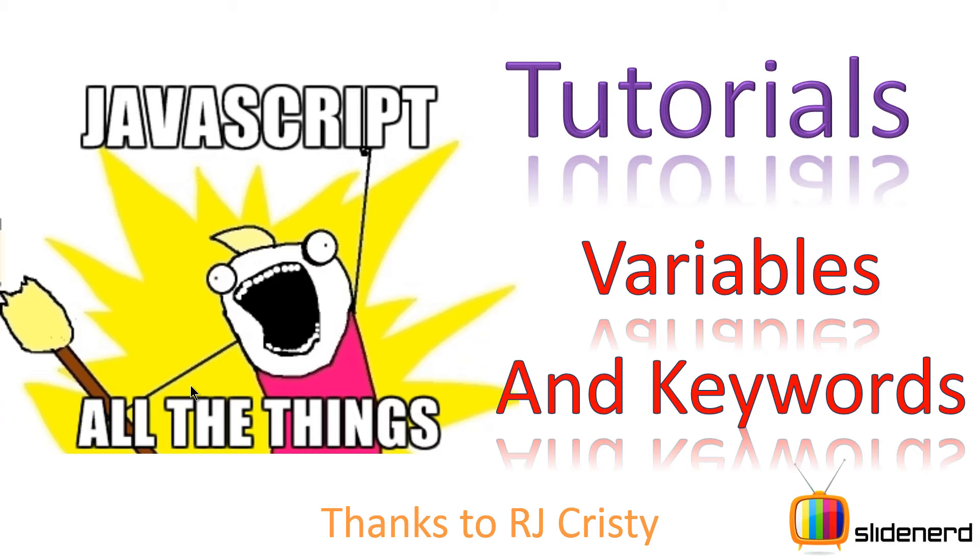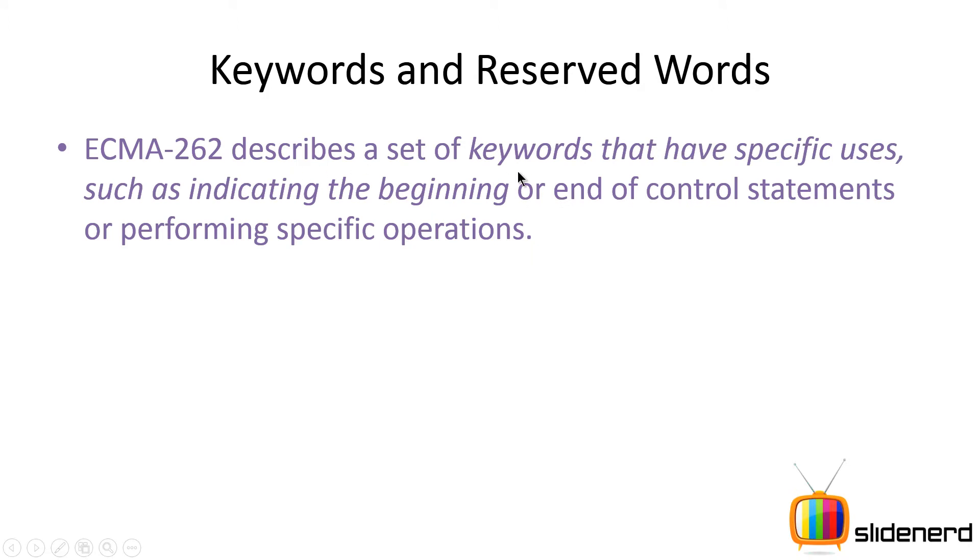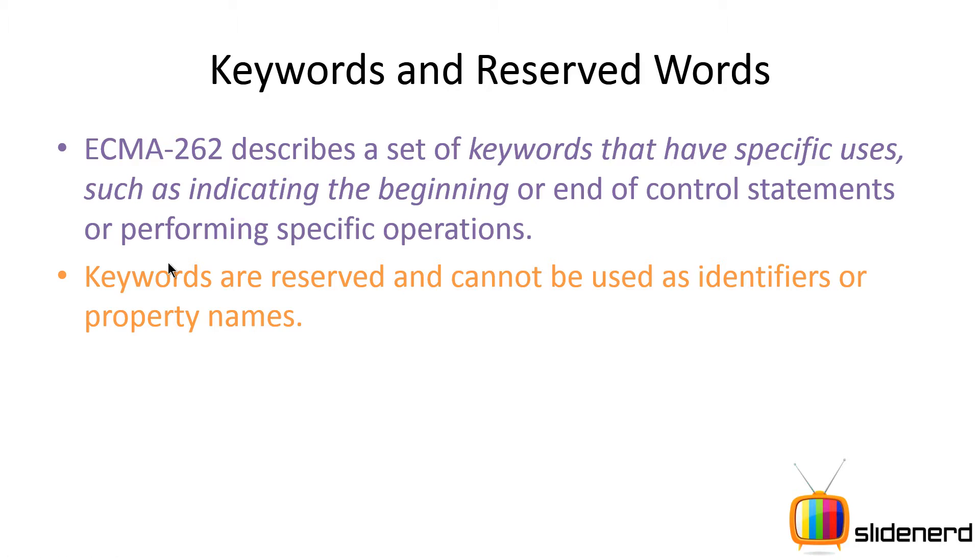JavaScript syntax or grammar defines how code should be written and the different rules when writing code. There are certain words called keywords which have predefined meaning assigned by your JavaScript interpreter. You cannot use these keywords for giving names or anything related to your own purpose.